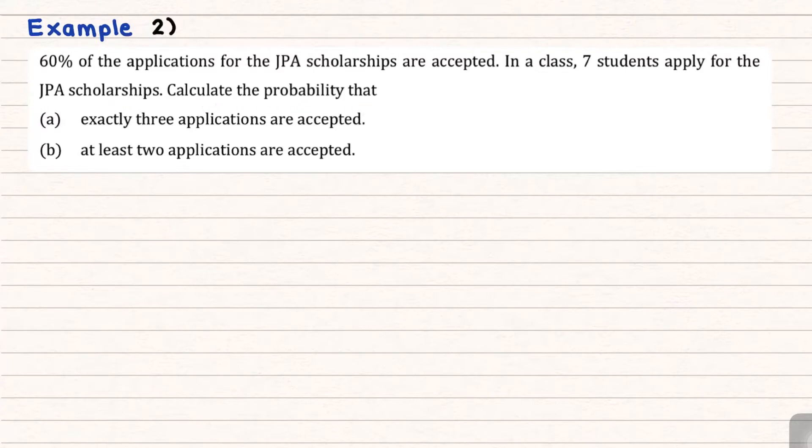Calculate the probability that exactly 3 applicants are accepted. In part B, at least 2 applicants are accepted.